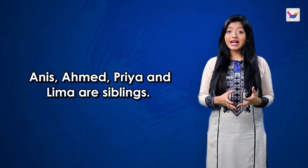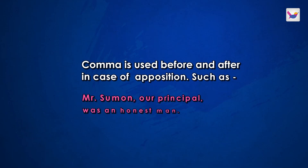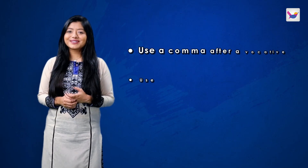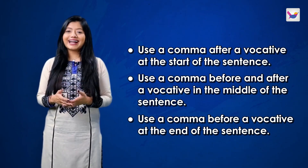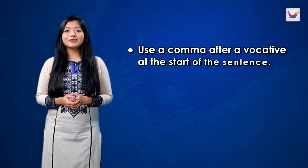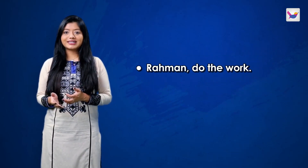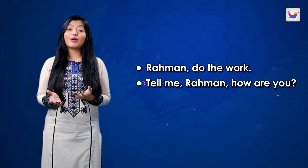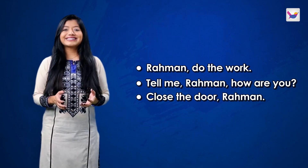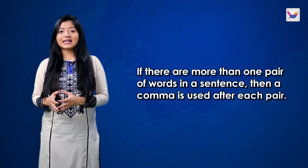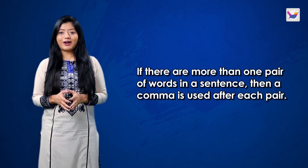A comma is used before and after an appositive. For example: 'Mr. Schumann, our principal, was an honest man.' When a vocative case appears at the beginning of a sentence, a comma follows it; in the middle, commas go on both sides; at the end, a comma precedes it. For example: 'Rahman, do the work.' 'Tell me, Rahman, how are you?' 'Close the door, Rahman.' When there are multiple pairs of words in a sentence, a comma follows each pair. For example: 'Black or white, new or old, any dress will do.'